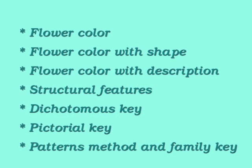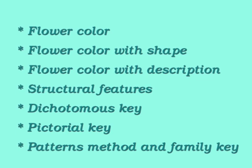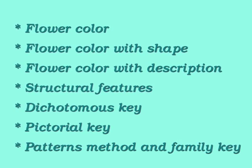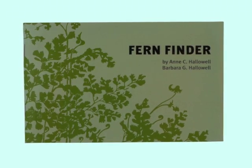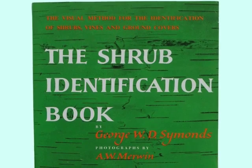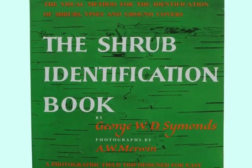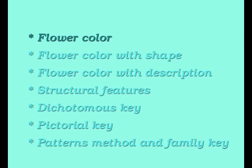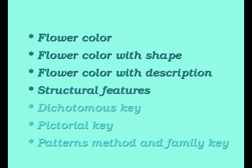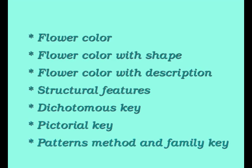This set of videos provides more detailed information about, and practice with, using different types of keys to identify plants. We'll be using nine different field guides and eight plants as examples for our study. Here's a list of the types of keys we'll be reviewing: flower color, flower color with shape, flower color with a description, structural features, the dichotomous key, a pictorial key, and using the patterns method with a family key.